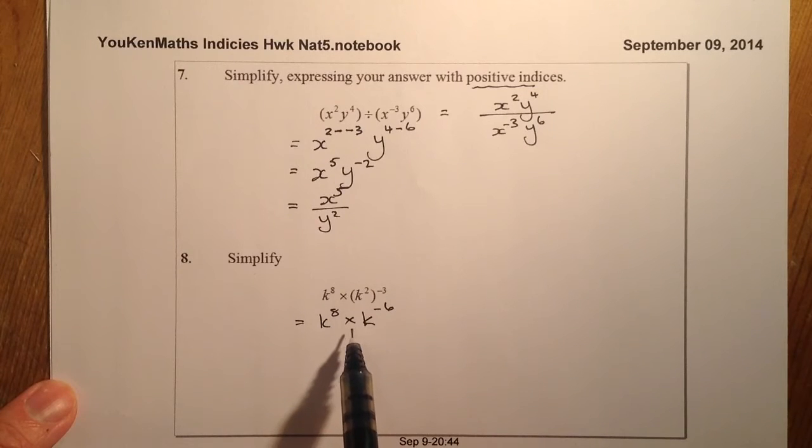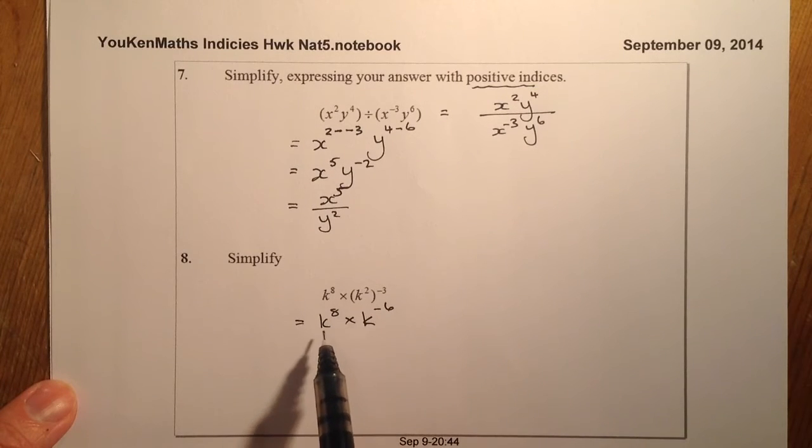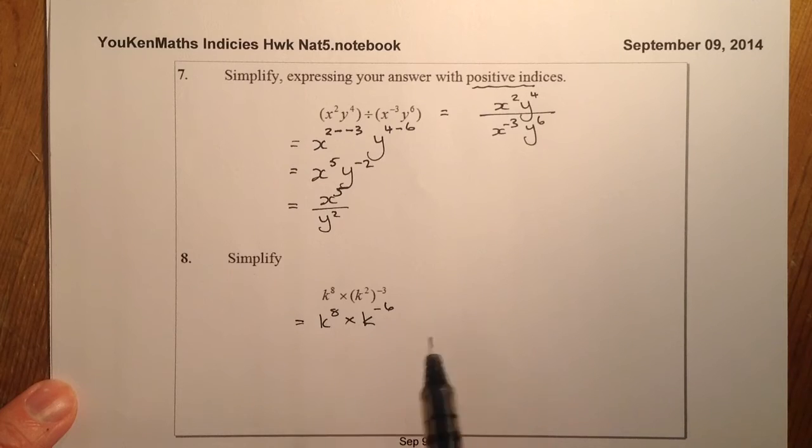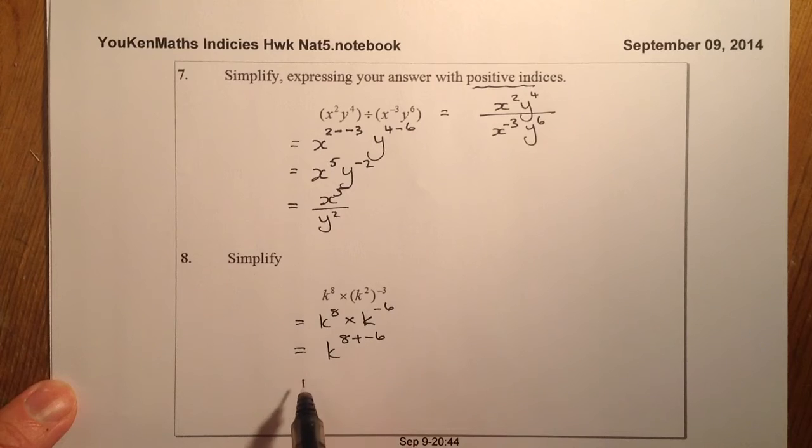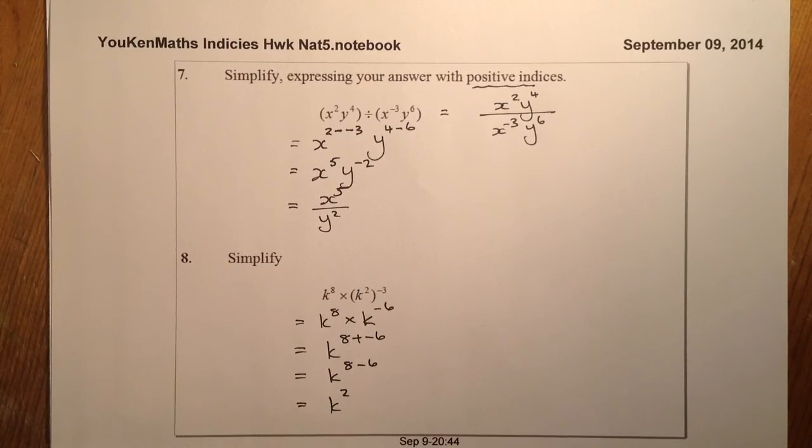When we multiply, we add the indices together. That's k to the power of 8 plus minus 6, the same as k to the power of 8 minus 6, which gives me k to the power of 2, or k squared.